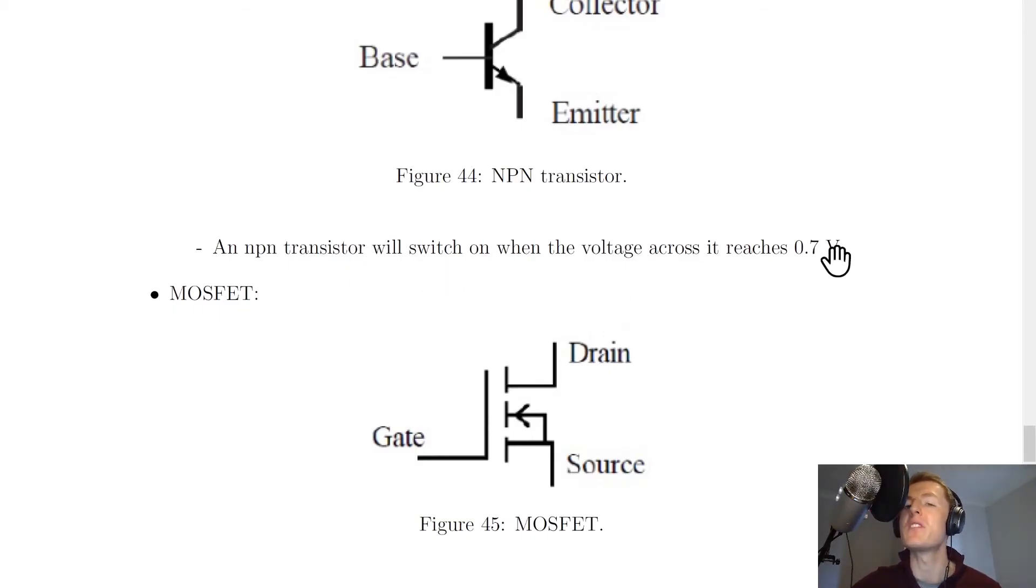So if the voltage across the NPN transistor is less than 0.7 volts, it will be switched off, and if it's greater, it will be switched on.